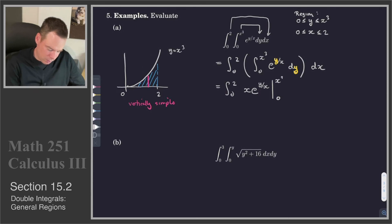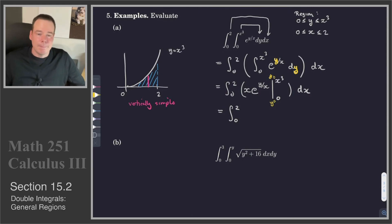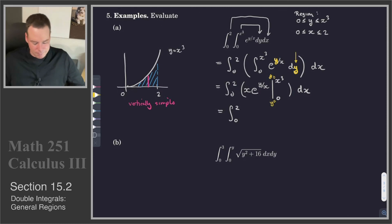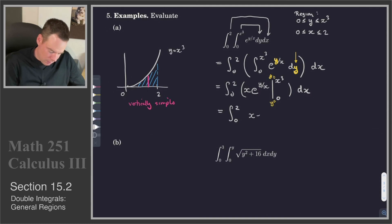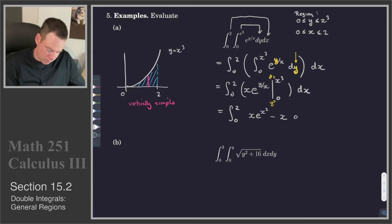Plugging x cubed in for y gives x·e to the (x cubed over x), which is x·e to the x squared. Plugging 0 in for y gives x·e to the 0, which is x. So the inner integral evaluates to x·e^(x²) minus x.